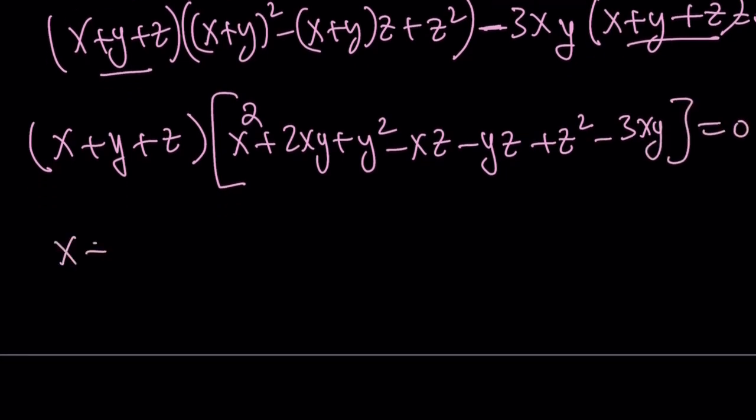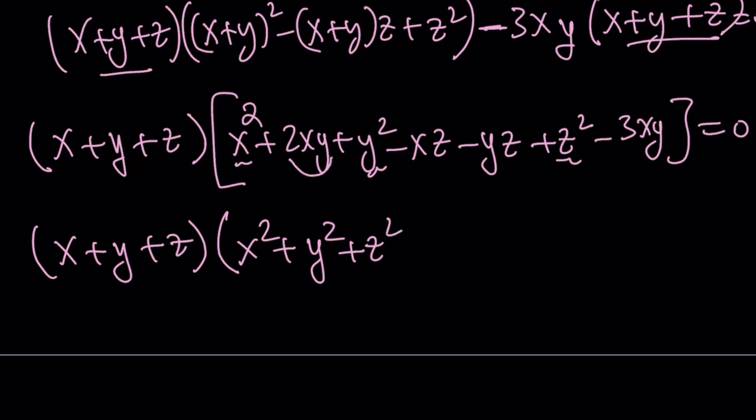Here's what we would like to do. x plus y plus z is going to stay together. And then the rest of the expression is going to look like this: x squared, y squared, and z squared. And now I have 2xy minus 3xy, which is going to give me negative xy, negative xz, and negative yz. And this product is equal to zero.